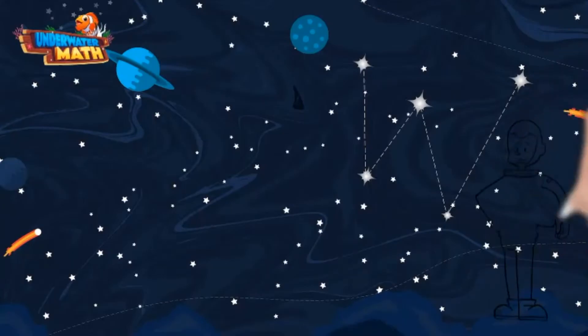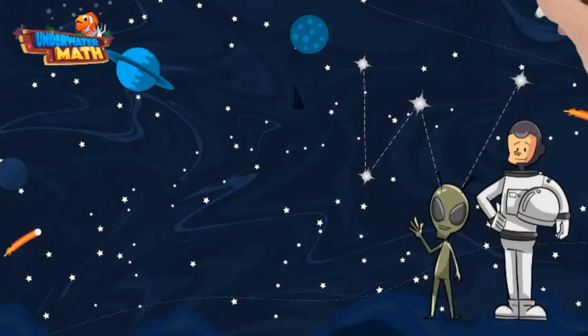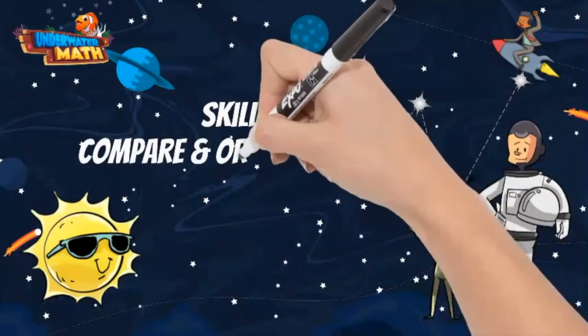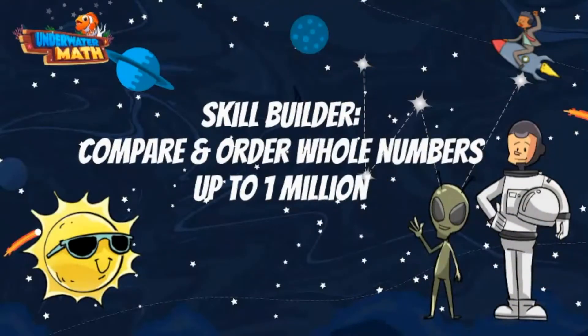Welcome to underwater math. I'm astronaut Steve and this is my alien friend Lenny. In case you haven't noticed, we are practicing math in space today to build our skills in comparing and ordering whole numbers to 1 million.